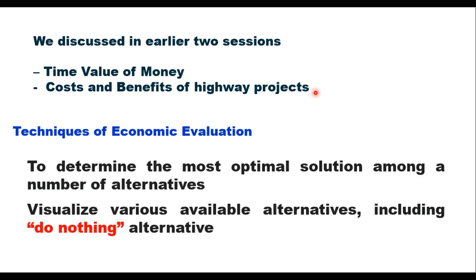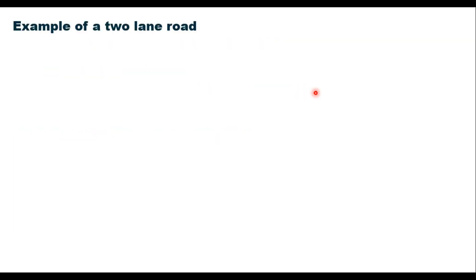Take the example of a two-lane road. Suppose a two-lane road needs pavement strengthening, but traffic forecasts also indicate that this road may need upgradation to a four-lane divided carriageway in the next three to four years. So there are four possible alternatives.